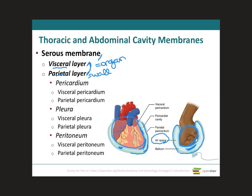The serous membrane lines not only close to the organ but also close to the cavity wall. Between the two membranes is the serous cavity, which contains a fluid called serous fluid. The main function of this fluid is to reduce friction between the two layers — for example, when the heart is beating, the serous fluid reduces friction during that process.